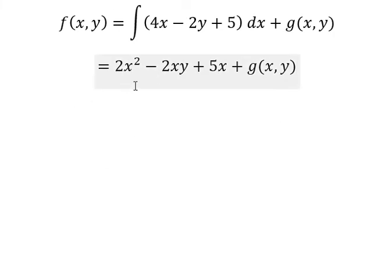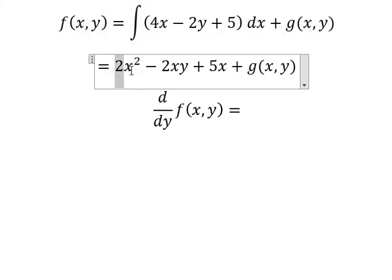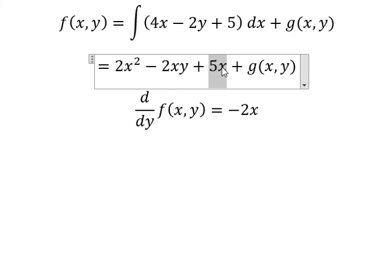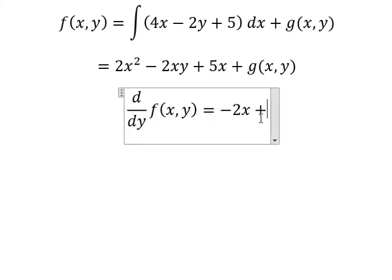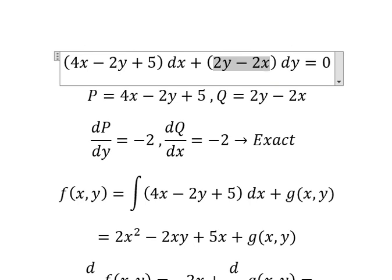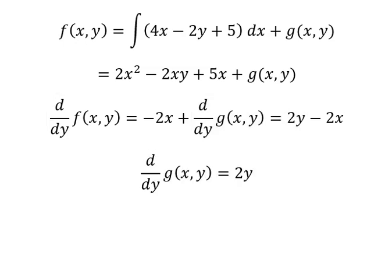We need to do first the differential of the function f with respect to y. This one we don't have y, so we get 0. This one we have y, so we have number one, and that is negative 2x. This one we don't have y, so we get 0. And now we put d/dy of 3xy. We know that this one equals to this one. Now we need to simplify negative 2x for both sides, and we have this.